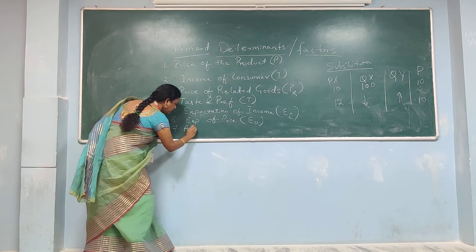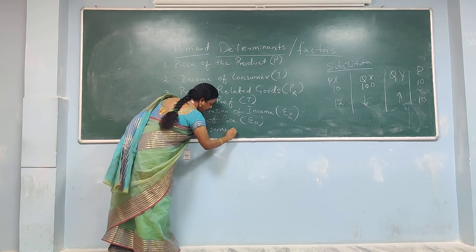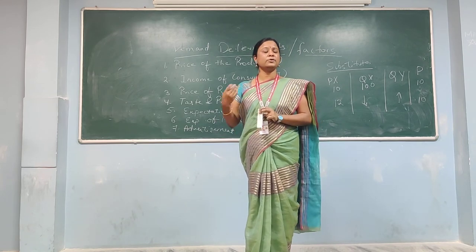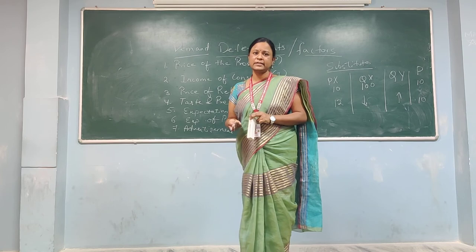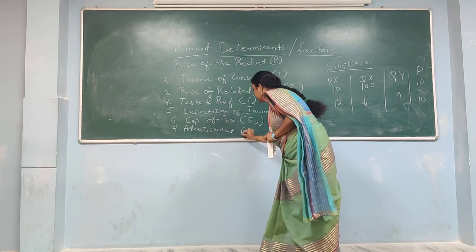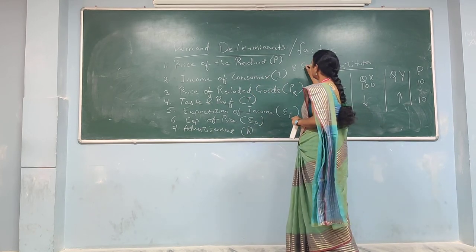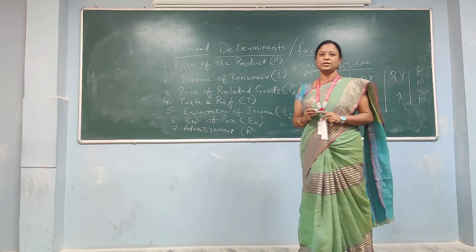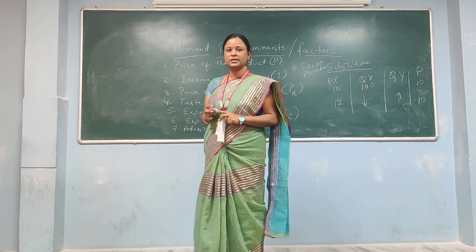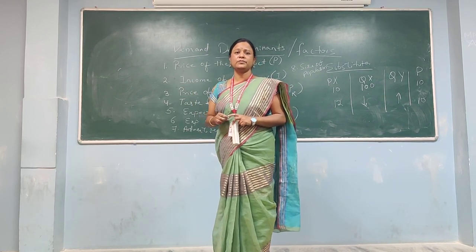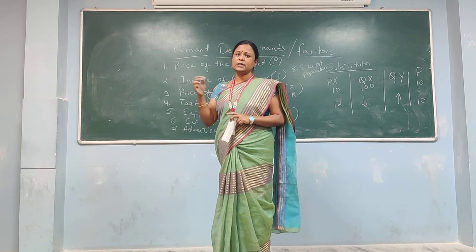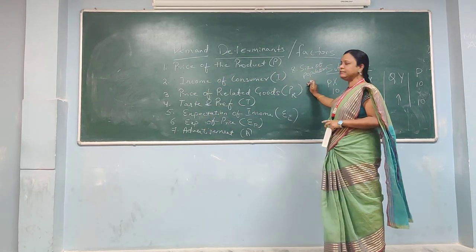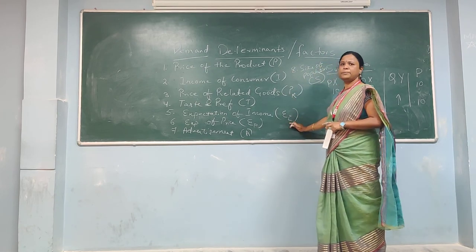The seventh factor is advertisement. If there is more advertisement — for example the advertisement of Patanjali products — as there is more advertisement, the quantity demanded is also increasing. The eighth factor is size of population. India has one of the highest populations in the world — second highest after China. Based on the population, many foreign companies come and sell their products in India to enjoy profits. So size of population is also one of the demand determinants.